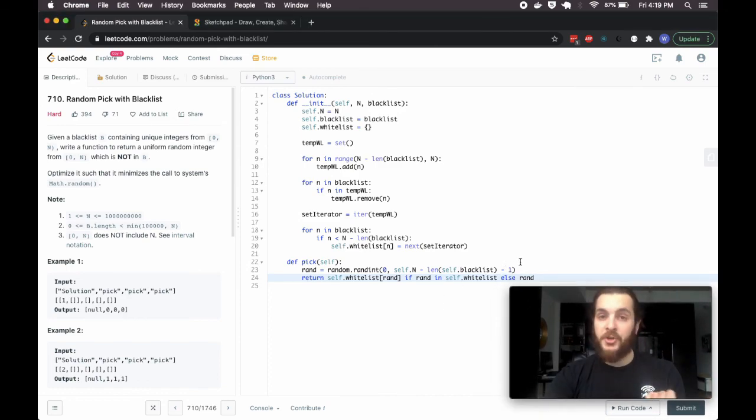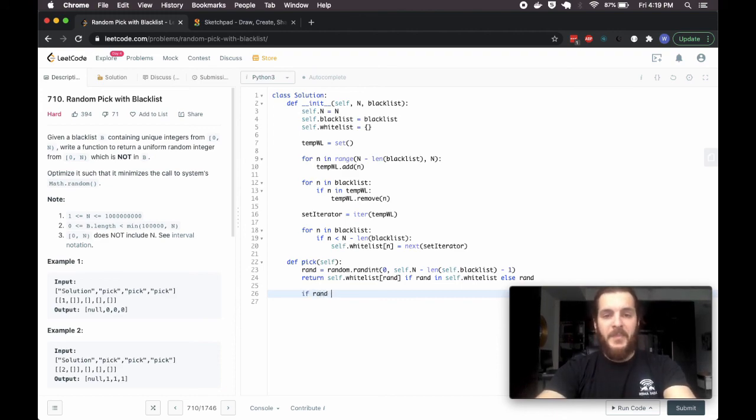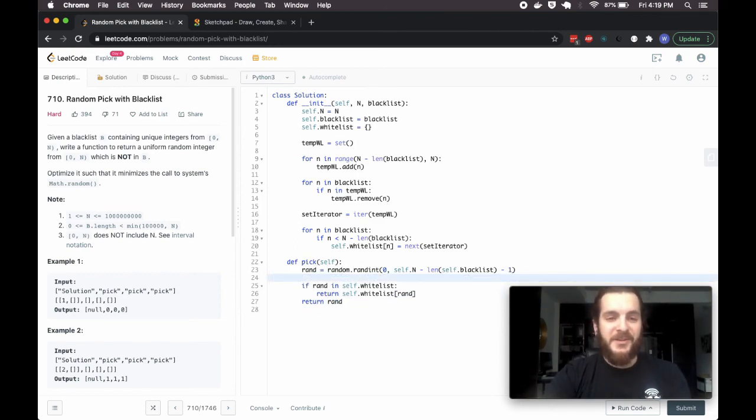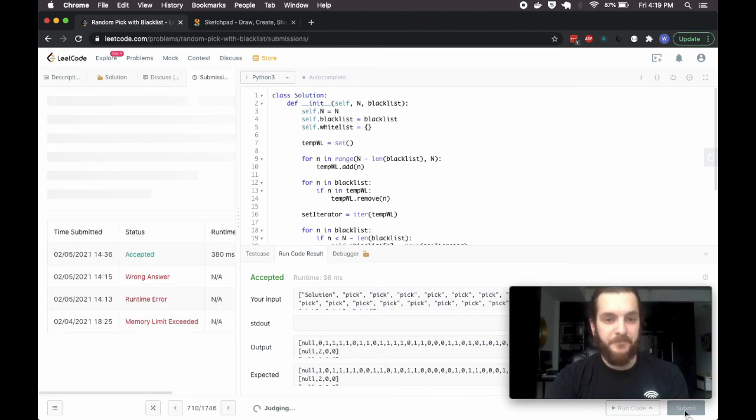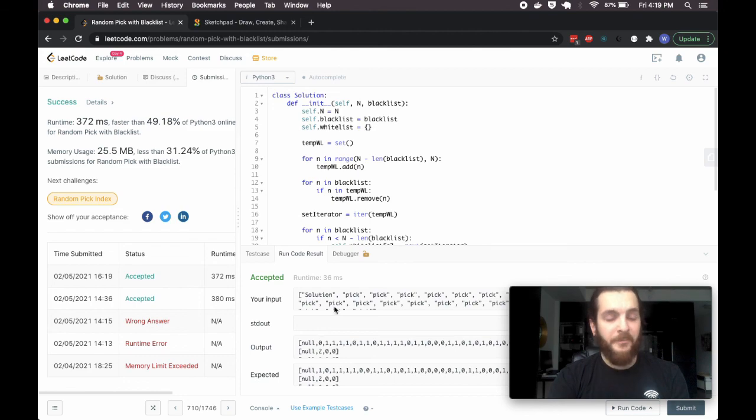You could very much just turn this into two lines. So you could say something like if rand in self.whitelist, you could return self.whitelist rand. Otherwise, you could just return rand. So this is perfectly fine. I actually, you know what, forget it here. I like the ternary statements. But in the videos, I try to stick to something that's more legible. So maybe we can do this. Like you could put this in an else statement. And maybe that way it'll be really crystal clear. And I'm going to run this and just make sure I didn't make any silly mistakes. And we're good.